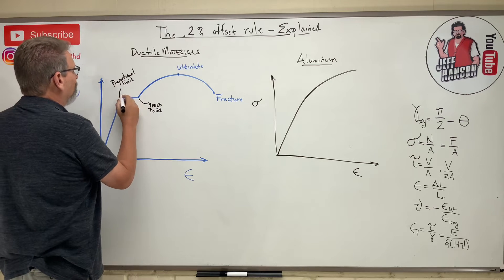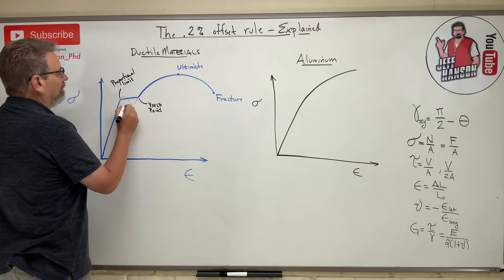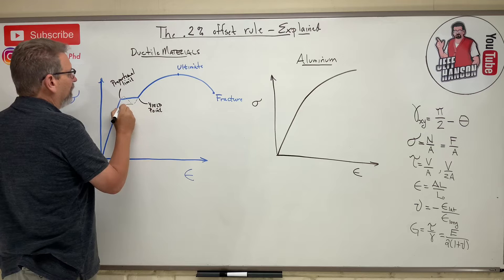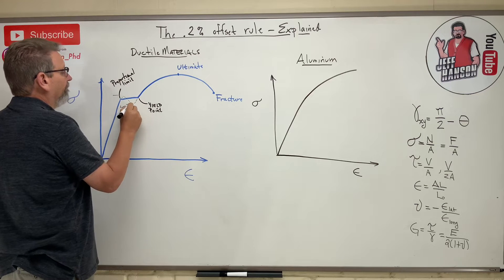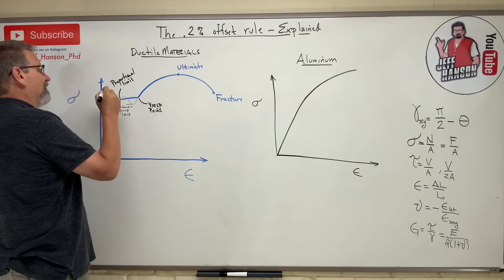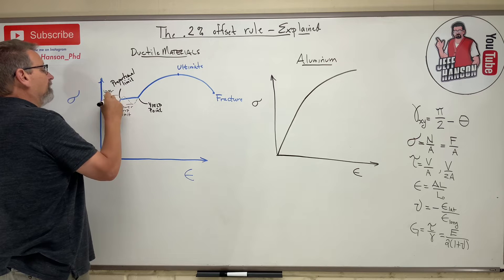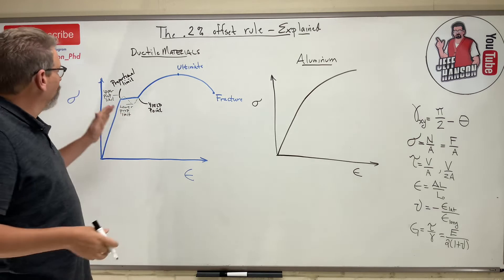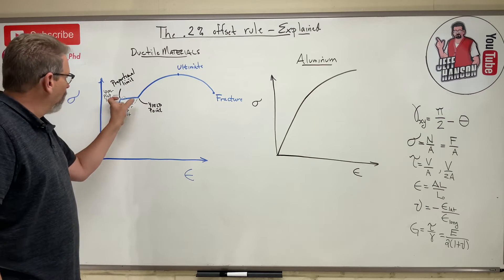What you actually have is an upper and a lower proportional limit — this is the lower proportional limit and this is the upper proportional limit. A lot of books don't explain this very well, and it's hard to tell what's going on.